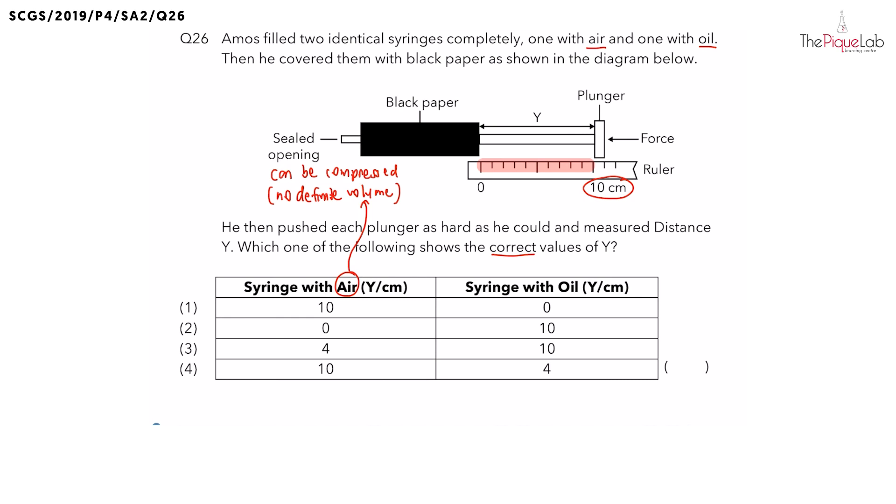Yes, distance y would decrease. Now remember what was distance y originally? Distance y was 10 cm. So if distance y is going to decrease, the final length of distance y should be more than or less than 10 cm? Yes, the final distance should be less than 10 cm.